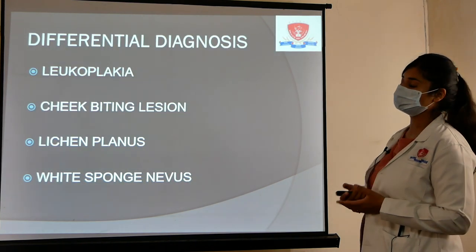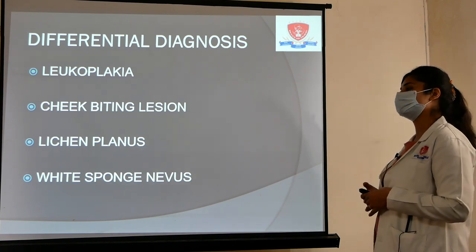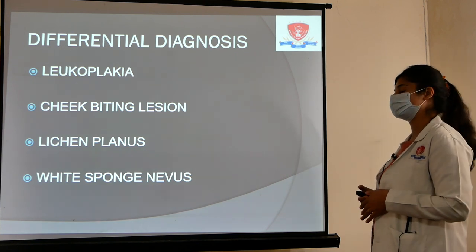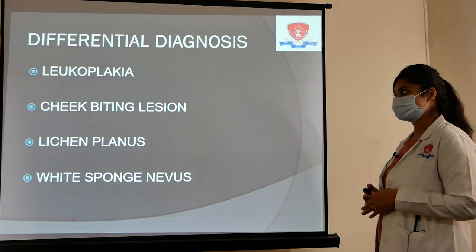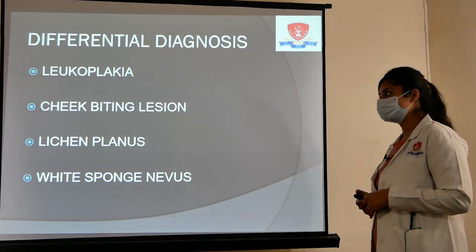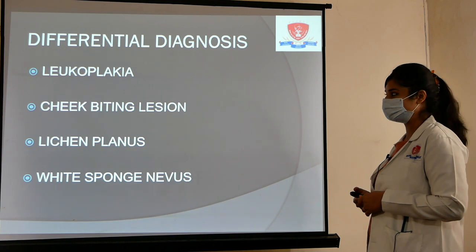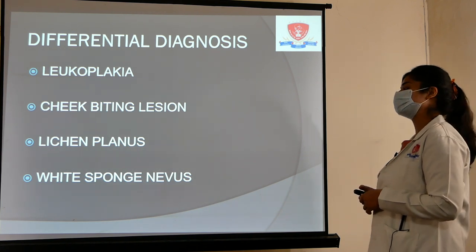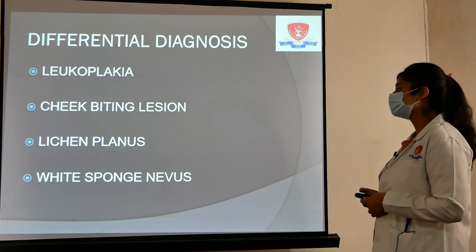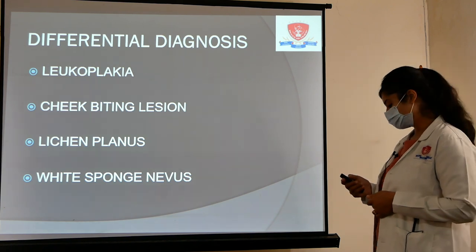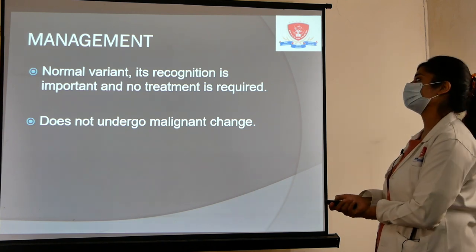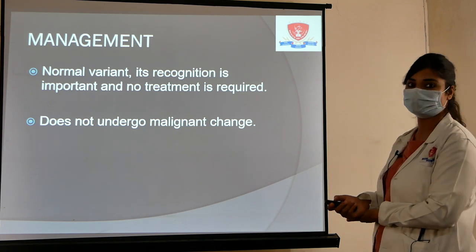Differential diagnosis includes leukoplakia — both leukoedema and leukoplakia cannot be scraped off with a tongue blade, but leukoedema disappears when the mucosa is stretched while leukoplakia does not. Cheek biting lesions can be distinguished by taking history from the patient. Lichen planus shows a striae-like appearance not seen in leukoedema. White sponge nevus is generally congenital. Management: leukoedema is a normal variant requiring no treatment, and it does not undergo any malignant change.